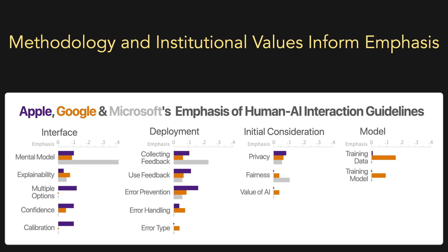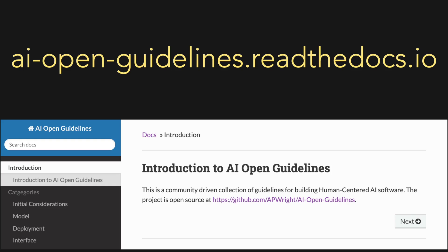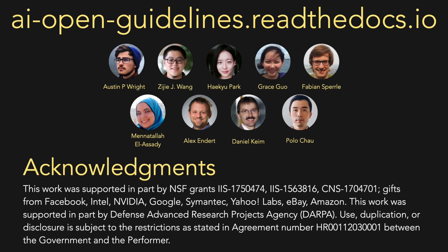Moreover, control over these guidelines is currently held by very few large companies, which might have incentives to emphasize different aspects of AI than the rest of the community. Therefore, these guidelines must be augmented by the community. Toward this end, the guidelines developed in this work can be found at aiopenguidelines.readthedocs.io, an open-source project putting forth a call to collect a community-driven set of human-centered AI guidelines. We'd like to thank you all for watching this presentation — please look at the paper or contribute to the repository.